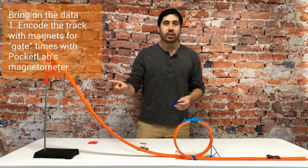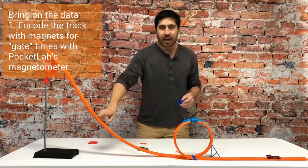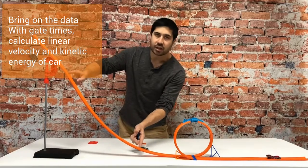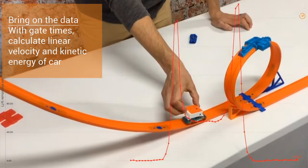Using that magnetic field change and the time, we can come up with timing gates, magnetic timing gates, at each of these sections. And knowing the distance that the car has traveled, we can come up with a calculation for the speed of our Hot Wheels car.